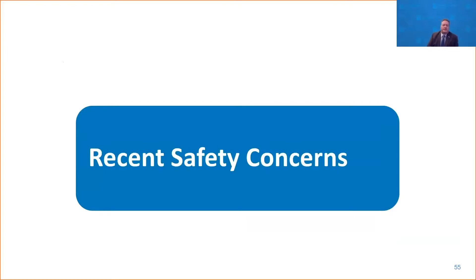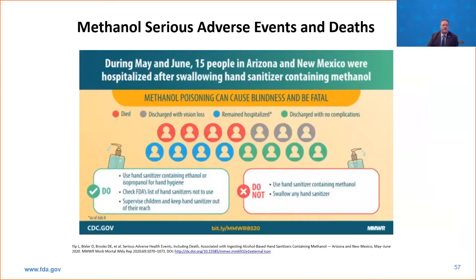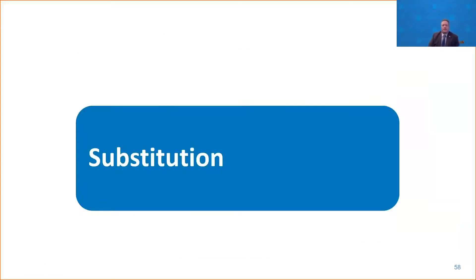Let's talk about the recent safety concerns we've seen with hand sanitizers. We have seen issues in terms of ingestion and issues related to methanol and 1-propanol. There was a cluster of fatalities in the desert southwest related to methanol-contaminated hand sanitizers. The culprit in terms of what we're seeing is substitution — and this is the real reason I'm here today, to talk about what we have seen and some of the requirements now going into place for the industry and the supply chain for alcohol.